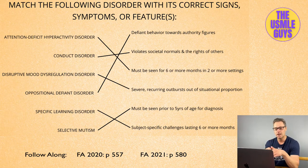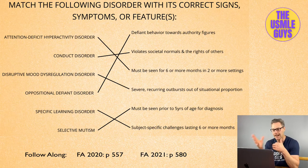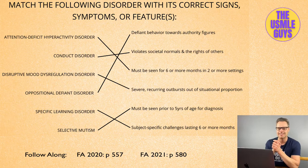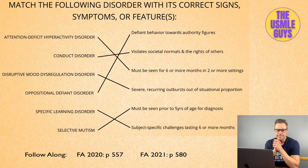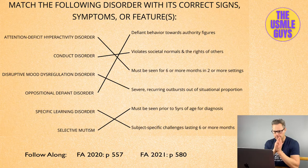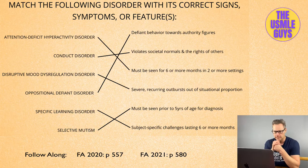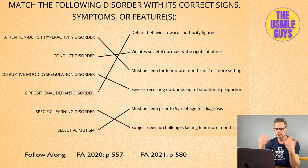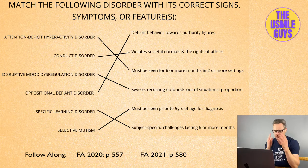Remember, you need to see conduct disorder prior to 18 years of age in order to make the diagnosis of antisocial after 18. We'll talk more about this in the personality disorders section. Next is disruptive mood dysregulation disorder, seen prior to 10 years of age. This is characterized by recurring temper outbursts that are out of proportion to what a situation merits — for example, a nine-year-old who completely flips out when you take a bite of his ice cream.